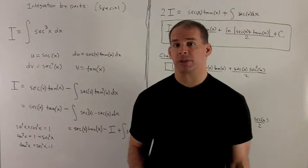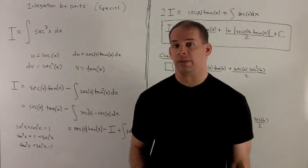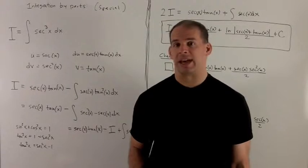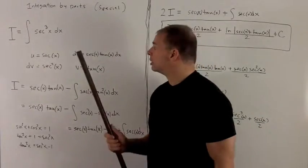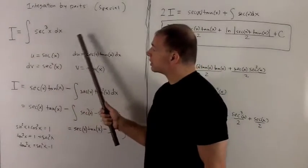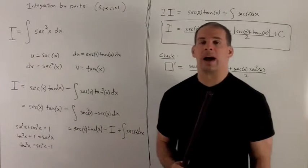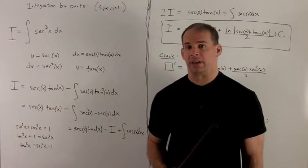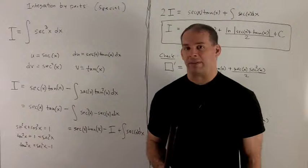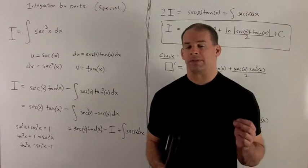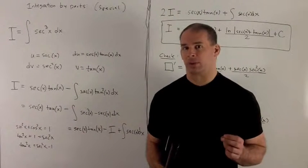Use integration by parts to find the indefinite integral of secant cubed of x dx. Take a look at this. I could play around with this for a while trying to find a u and a dv. After a while it's going to be obvious that for a straightforward integration by parts nothing's going to work.